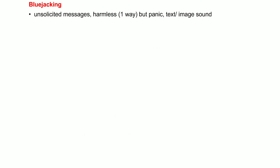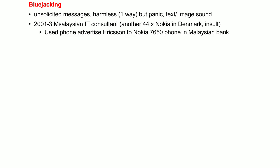In Blue Jacking, we basically send an unsolicited message to our target device using its Bluetooth. This attack is essentially a harmless attack — it is one way, meaning you can only send messages but cannot receive any response. Since this message is not requested by the owner of that device, it causes panic. This message can be text, an image file, or a sound file. The Blue Jacking attack surfaced in 2001-2003 by a Malaysian IT consultant.